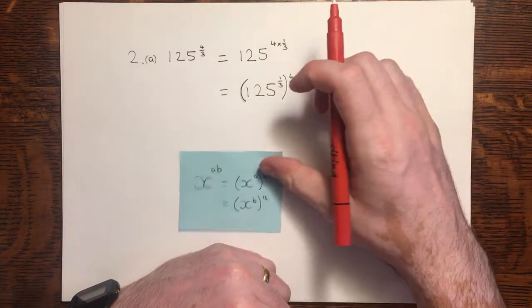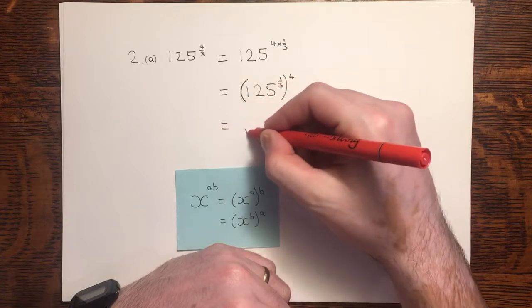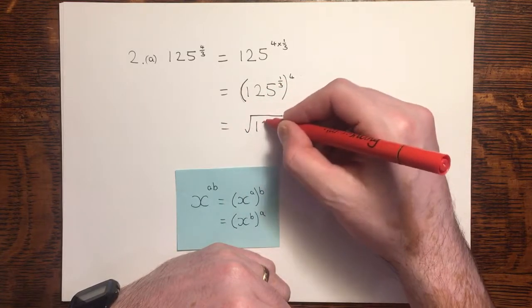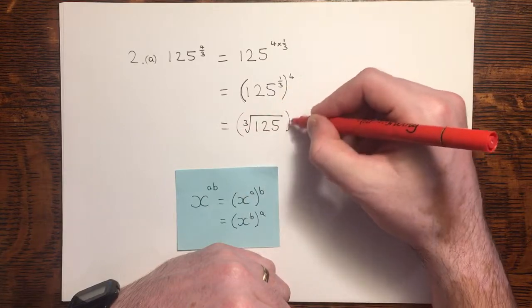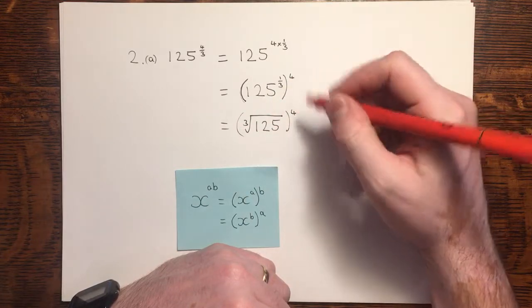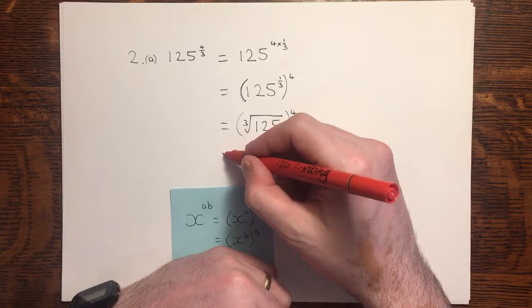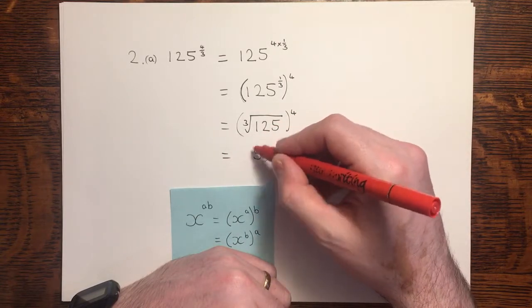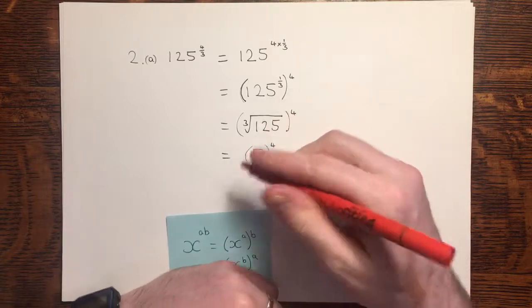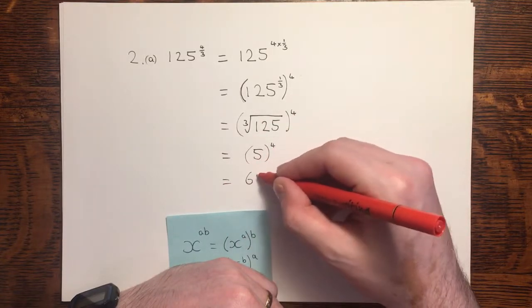Now I've chosen to put the third inside because I know that cube rooting first will give me a smaller number, and it's easier to make it smaller first before then making it larger again with the index outside the brackets. The cube root of 125 is 5, and that to the power of 4 is 625.